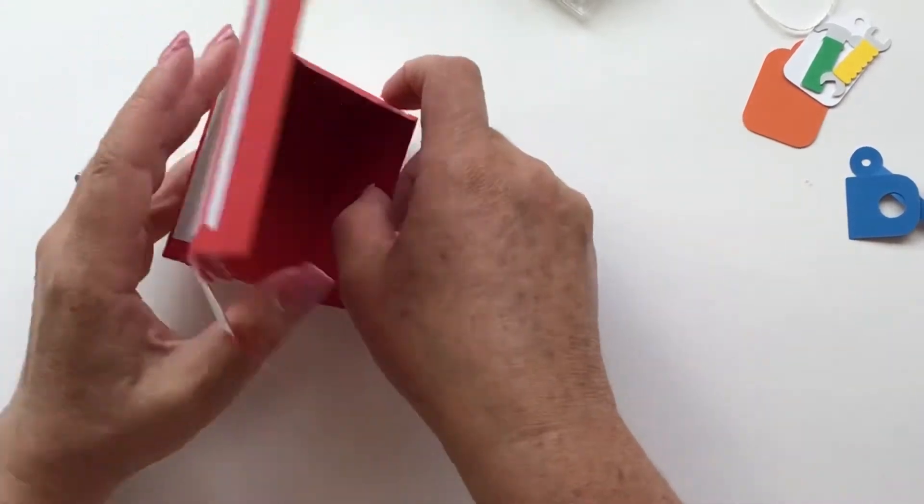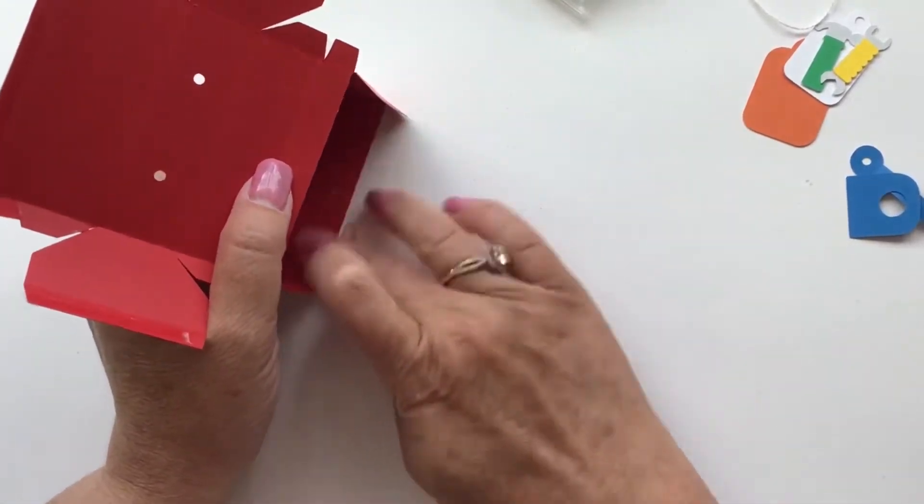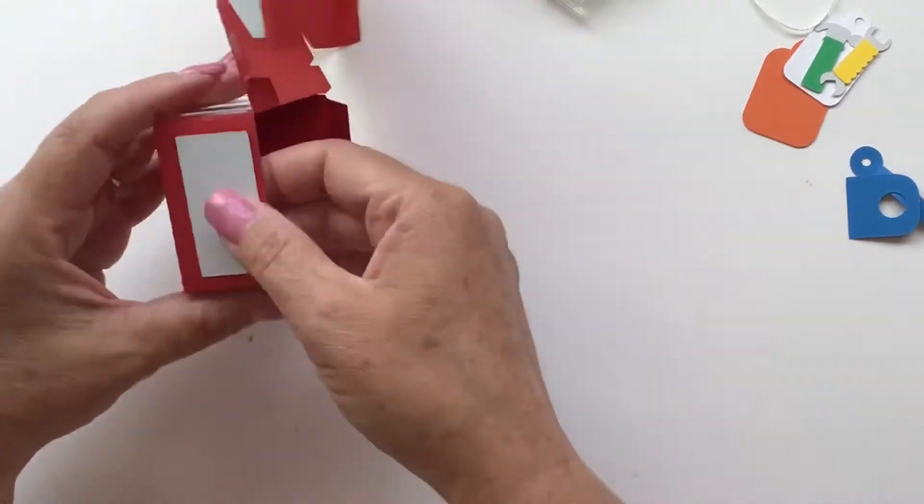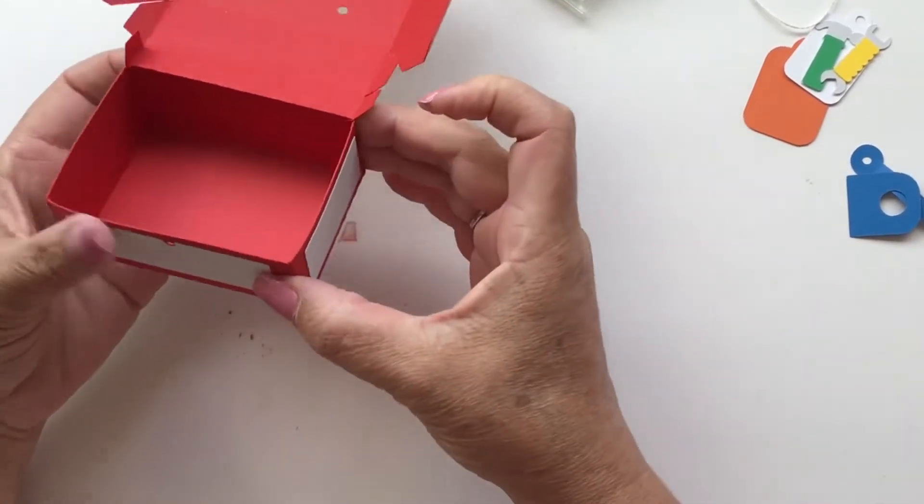And the only reason I added those is it just gives it a little bit of strength when the box is all folded up. If you're putting some candy or something in there, it just kind of strengthens it up a little bit. So there is the bottom.